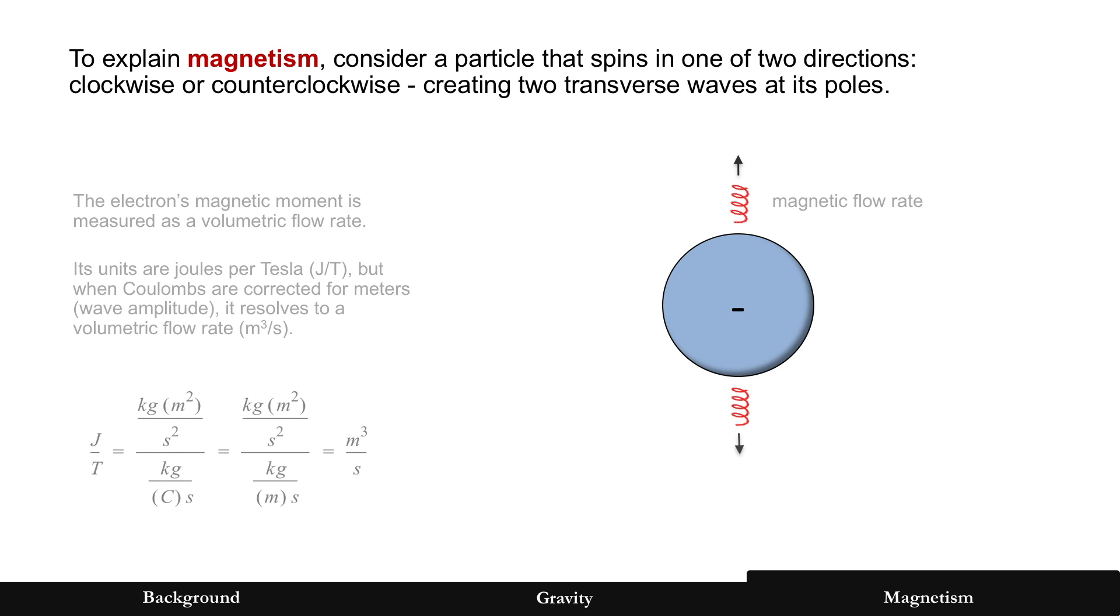Now, the magnetic moment for the electron is actually a strange one in terms of units. It's not energy or forces, which would make life a lot easier to be able to explain everything. Its units is something called joules per Tesla. But everything else so far has been measuring coulombs, which is the unit for charge, as wave amplitudes. And wave amplitude is distance, meters in SI units. When you do that conversion, you can see joules per Tesla there at the bottom left. It becomes a volumetric flow rate, meters cubed per second, which makes it a lot easier. It makes a lot more sense to explain magnetism now. It's flowing out of the electron at that rate.